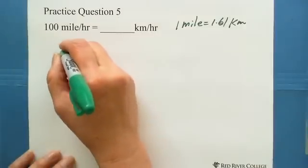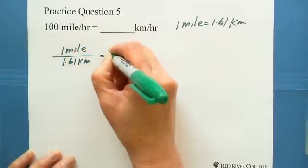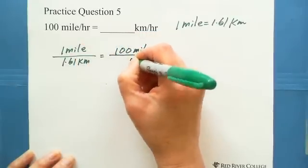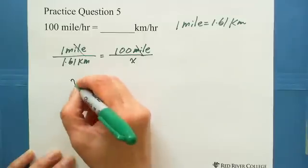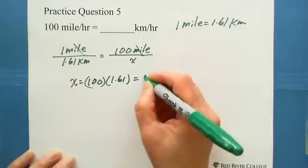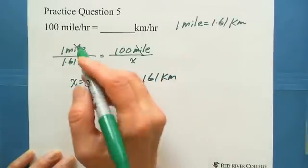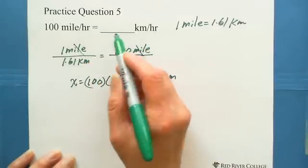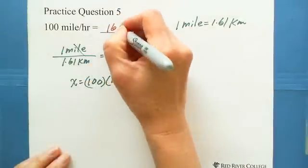Now we have 100 miles, miles on the top, equals how many kilometers. Miles cancel out. Cross multiplication, 1 times x equals x equals 100 times 1.61 which equals 161 kilometers. So 100 miles equals 161 kilometers. The unit per hour doesn't change. That's why 100 miles per hour is equivalent to 161 kilometers per hour.